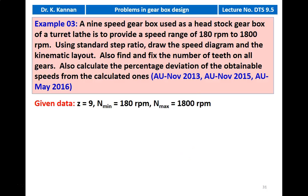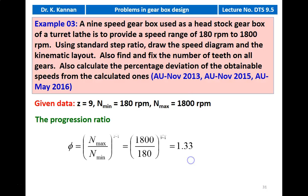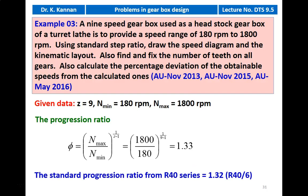We write down the given data: number of steps equal to 9, minimum speed 180 RPM, maximum speed 1800 RPM. We calculate the progression ratio φ equal to (n_max / n_min) to the power 1/(z−1), which gives 1800/180 to the power 1/(9−1) equal to 1.33. The standard progression ratio from the R40 series is 1.32, which is R40 by 6.